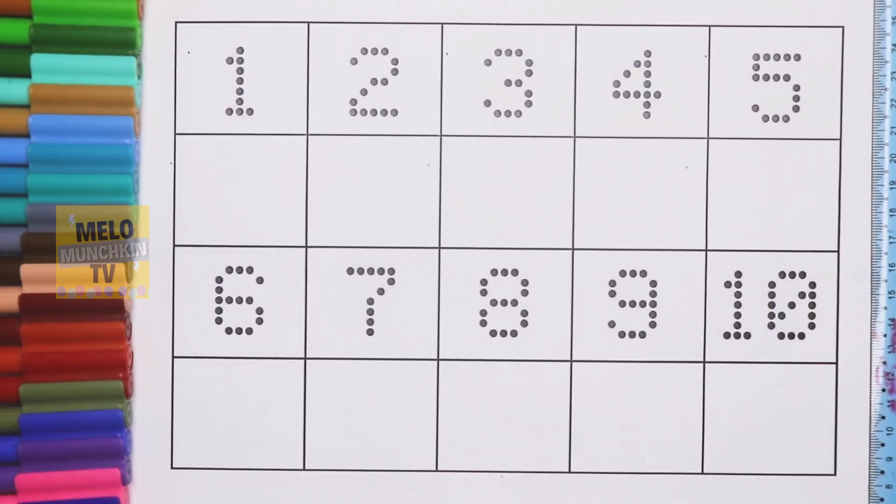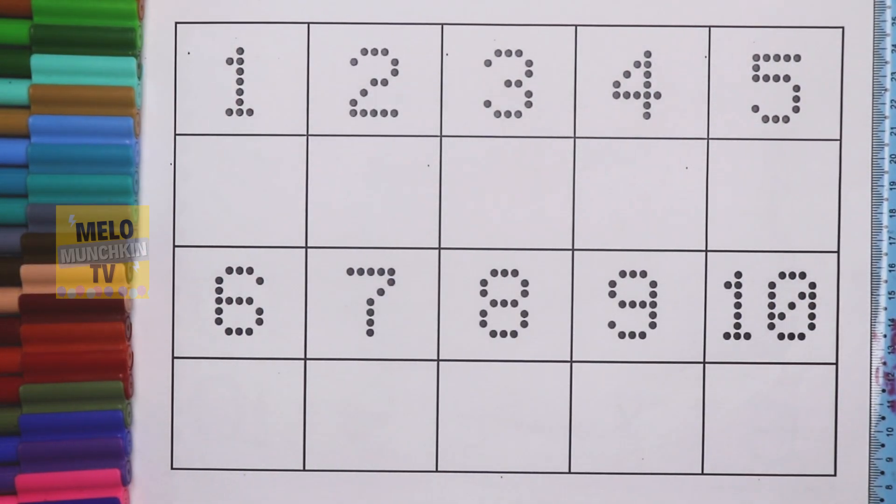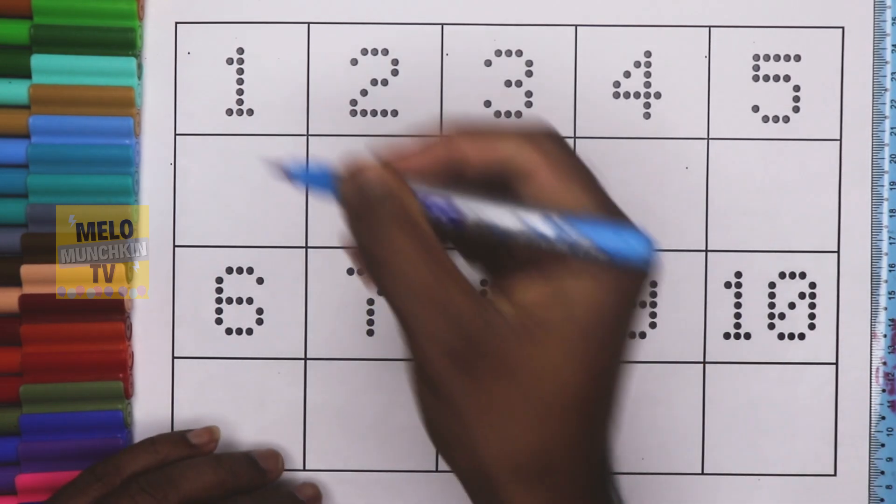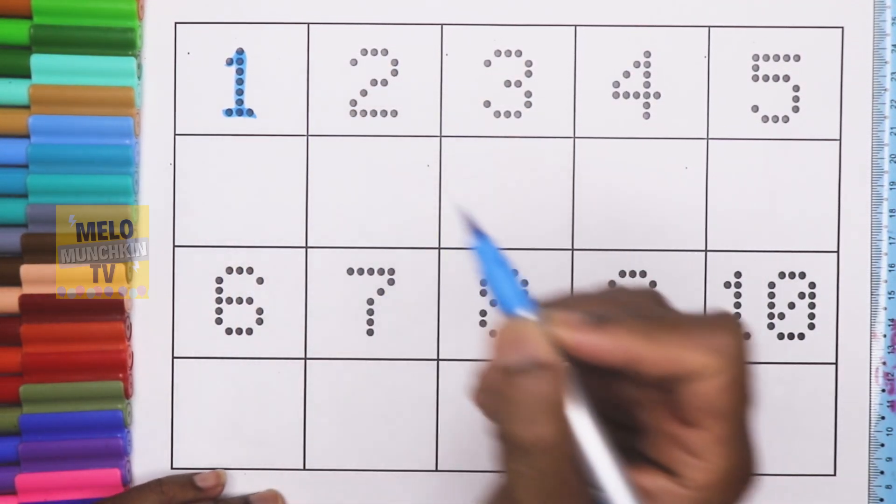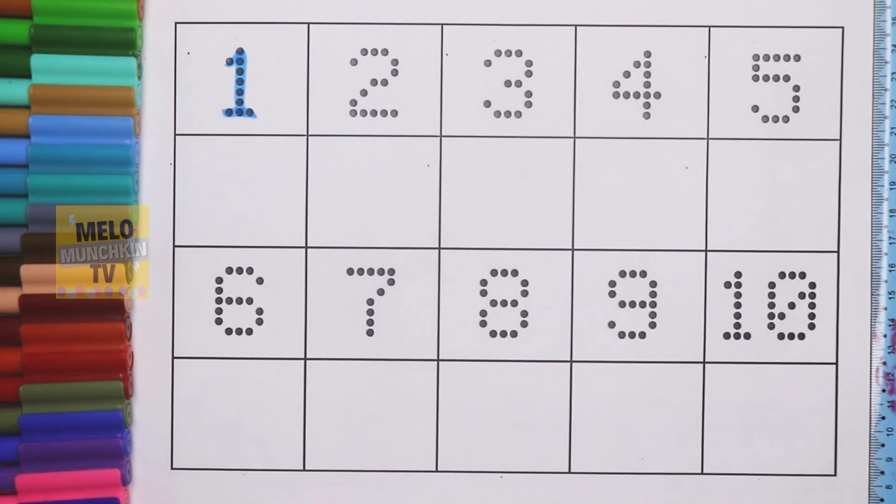Hello kids, today we will learn numbers from 1 to 10. So let's get started. This one is blue color, light blue color. This is number 1, O-N-E, 1. Okay, next I'll take orange color. This is number 2, T-W-O, 2.